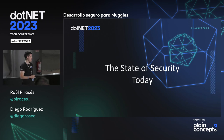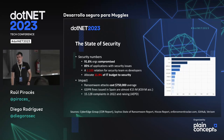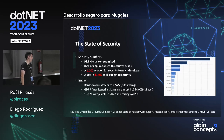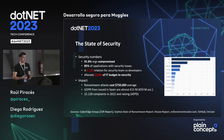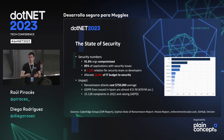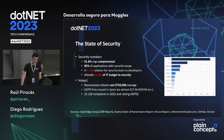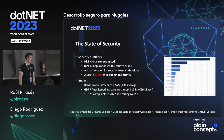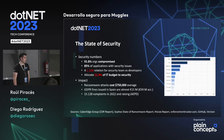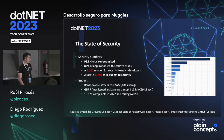Empezando con el estado de la seguridad hoy en día, es bastante mejorable, a nivel global y a nivel de España. La mayoría de las organizaciones han sido comprometidas alguna vez, las aplicaciones contienen problemas de seguridad sin solucionar, hay una relación muy baja de 1 a 100 entre equipo de seguridad y desarrollo, y las empresas alojan muy poco presupuesto para seguridad. En España estamos en unas 650 multas anuales de GDPR.